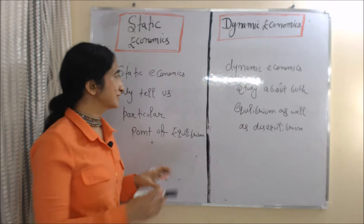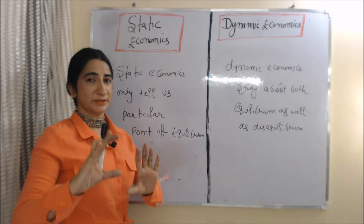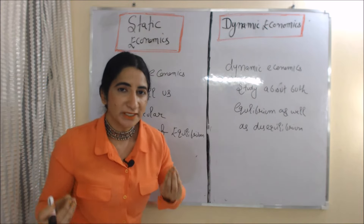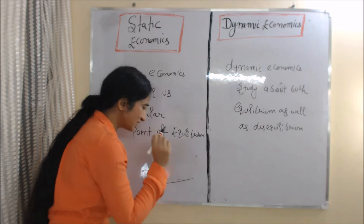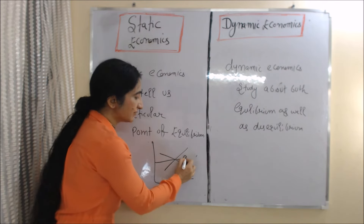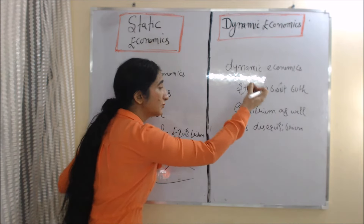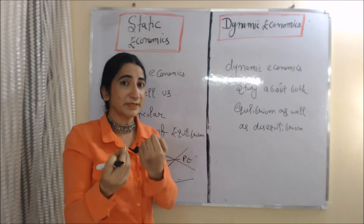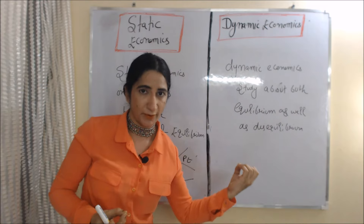The last difference is that static economics only tells us about a particular point of equilibrium — specifically, where demand and supply intersect, which is called the equilibrium price. On the other hand, dynamic economics studies both equilibrium as well as disequilibrium, because it tells us how we move from disequilibrium to the equilibrium point.